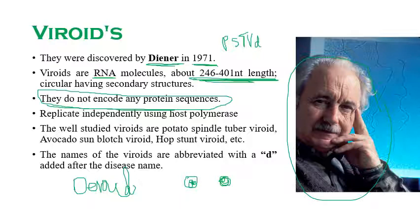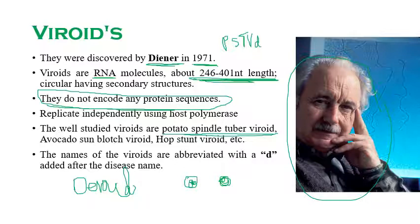The well-studied viroids are potato spindle tuber viroid — the first viroid discovered by Diener — as well as navigator sunblush viroid and hop stunt viroid. Viroids are abbreviated with 'Vd' at the end of their names.